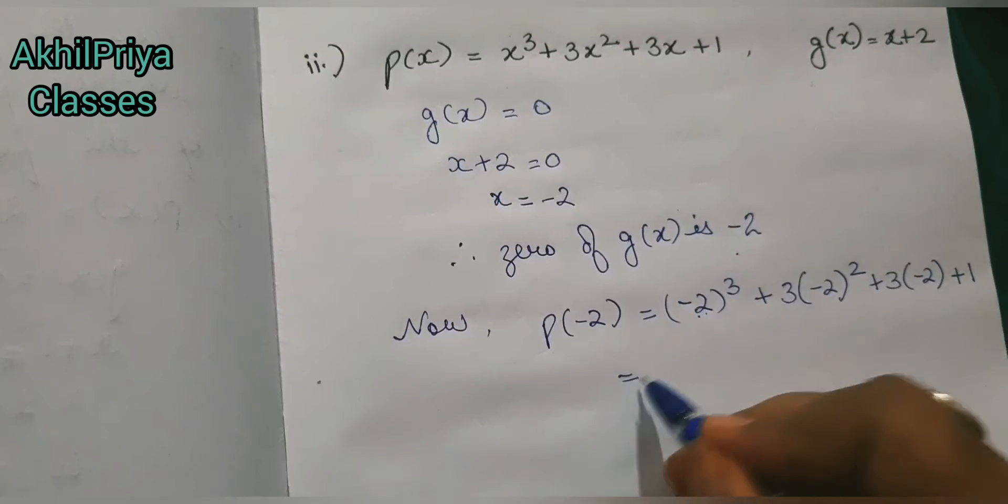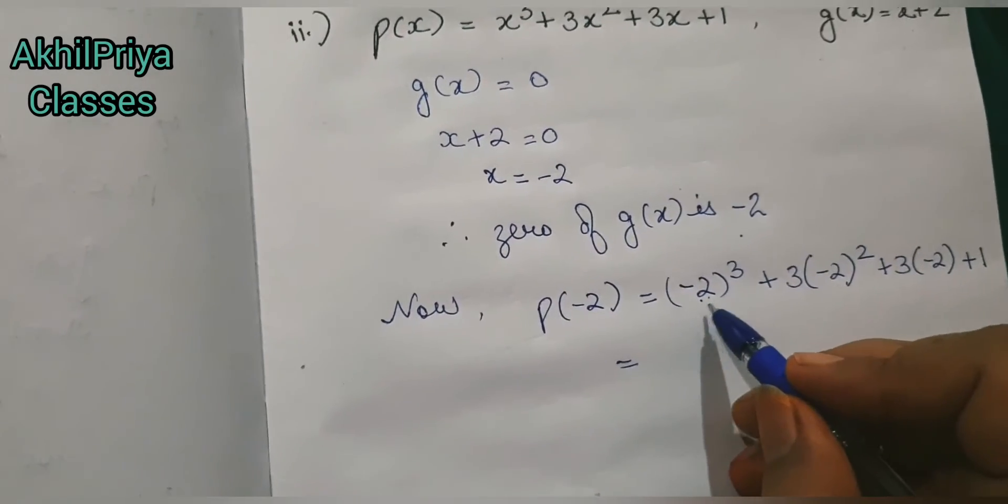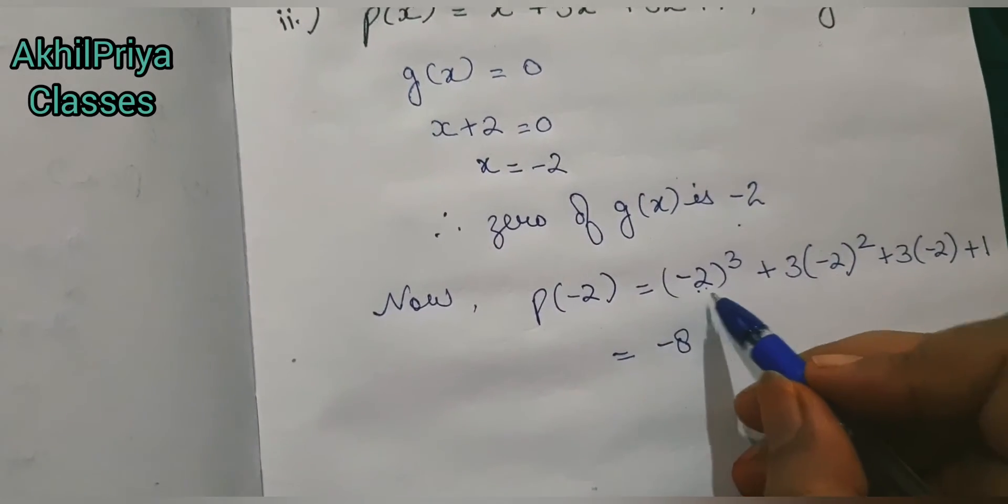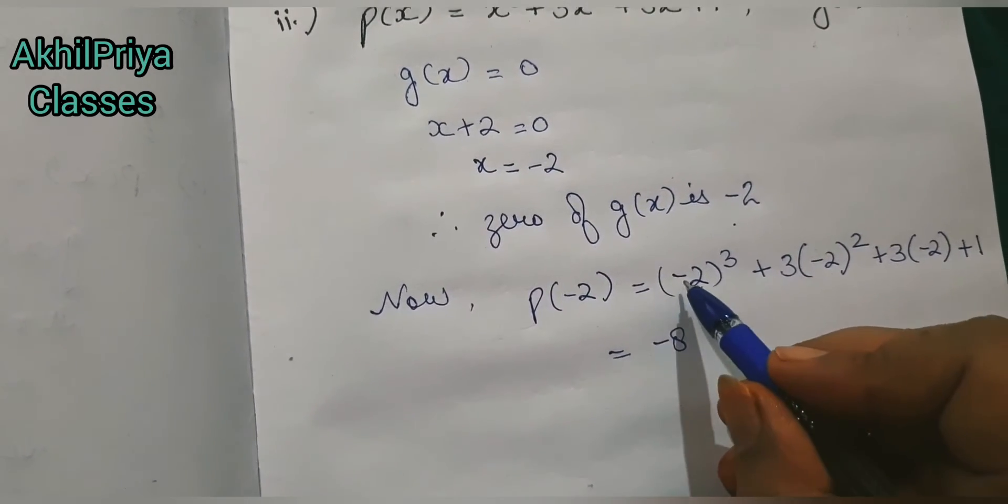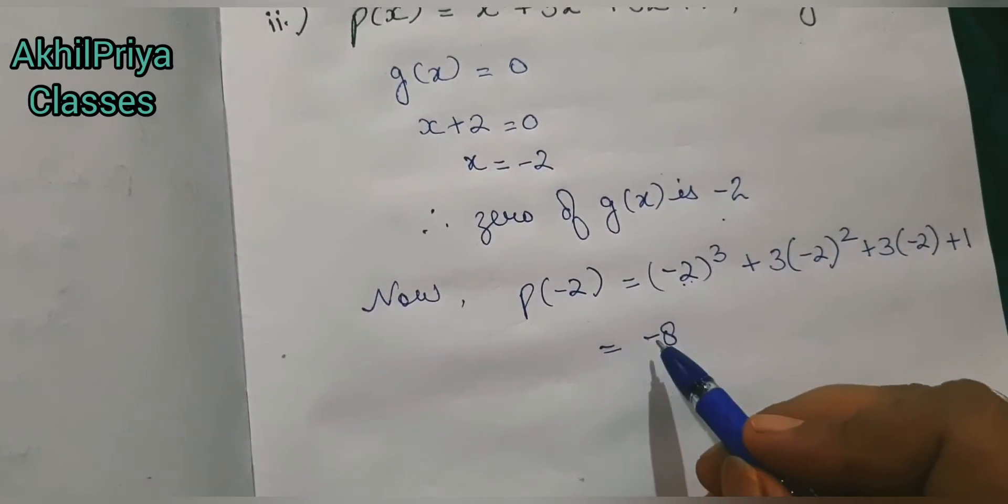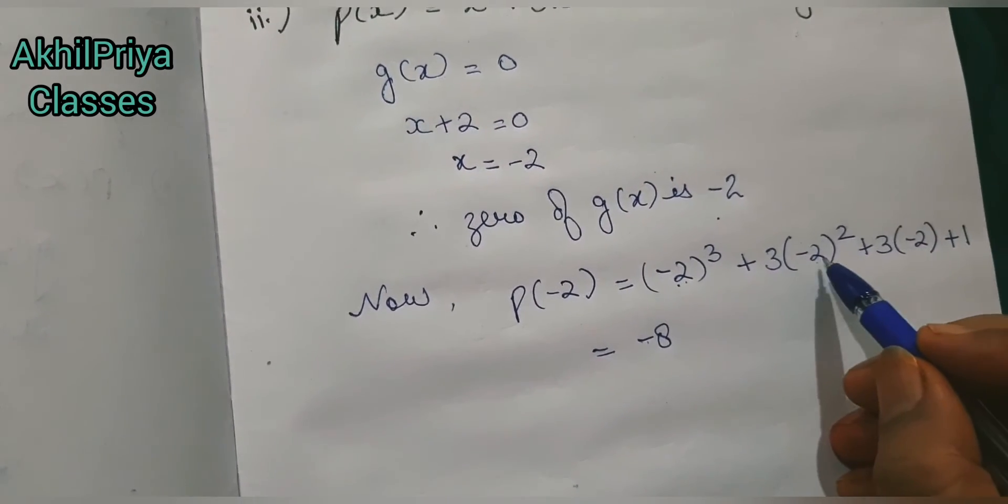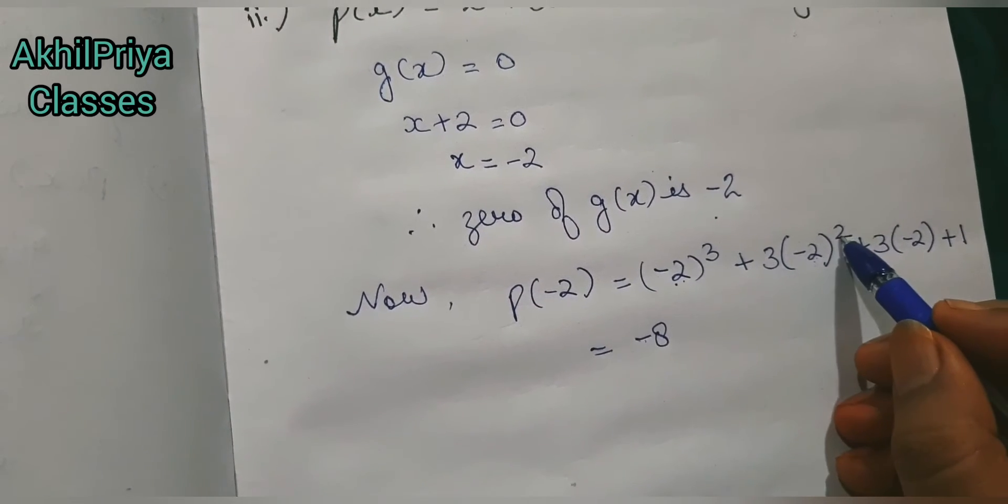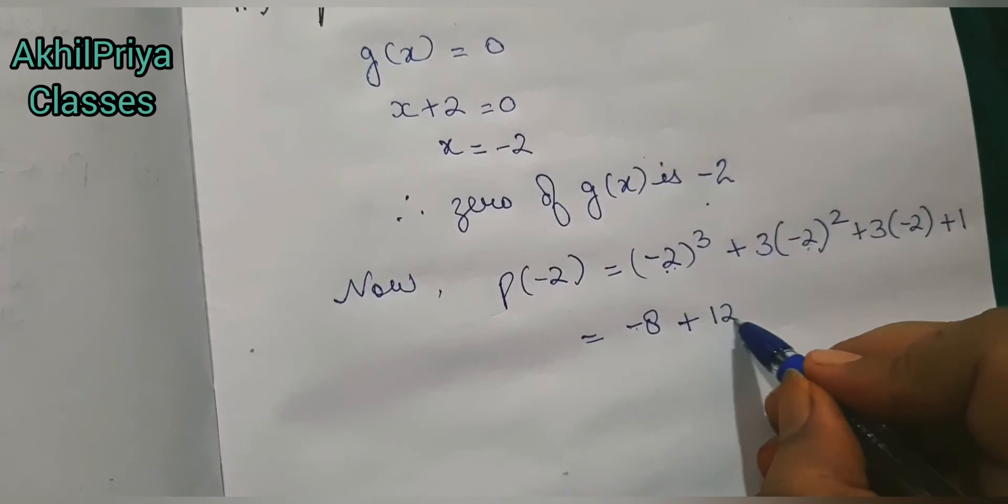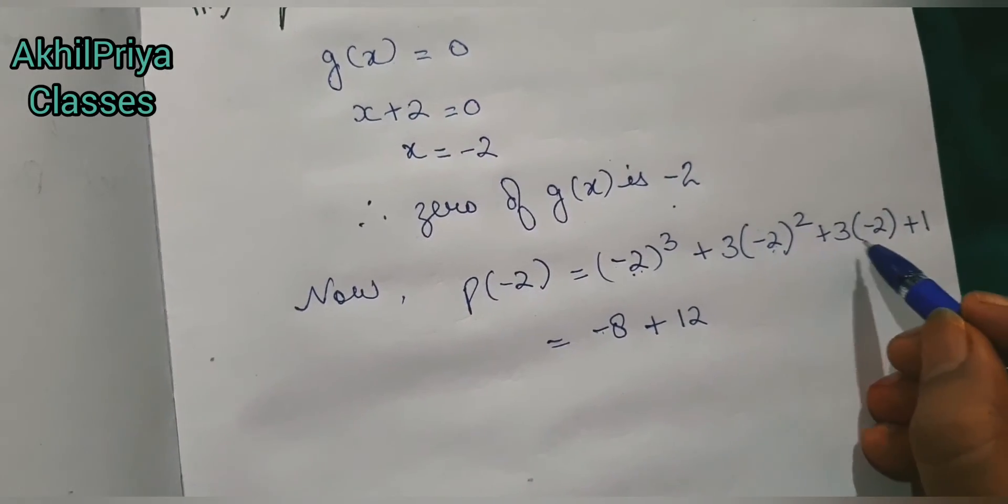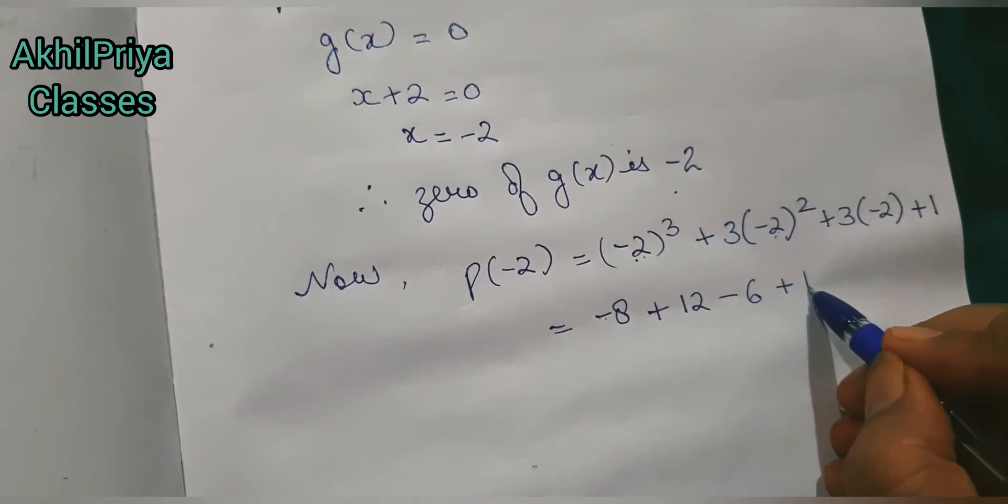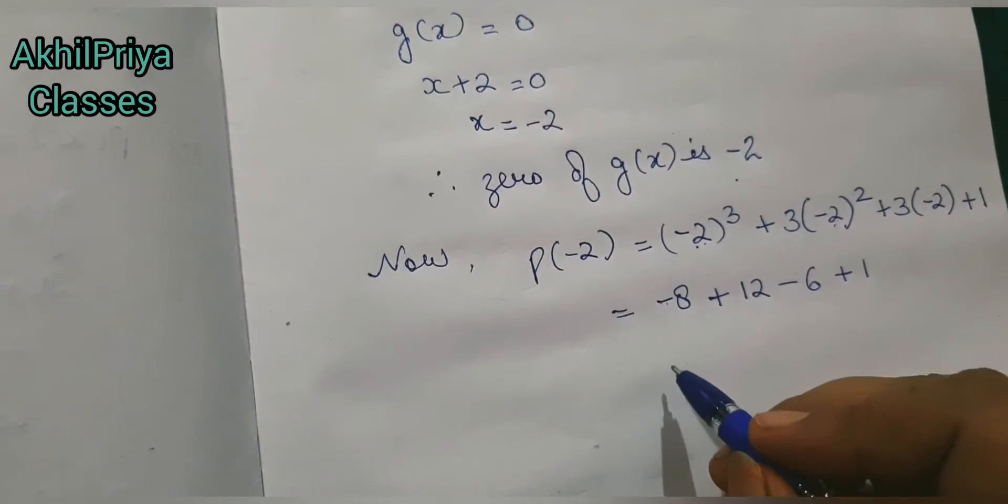Now we will simplify this. Opening the brackets, (-2)³ = -8, then 3 × (-2)² = 3 × 4 = 12, then 3 × (-2) = -6, and +1.